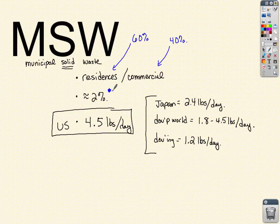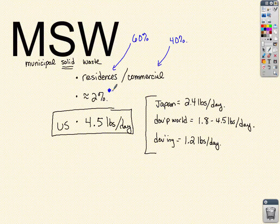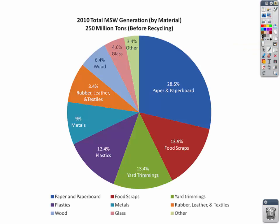What happens to all this waste? There are really three things: it can be disposed of in a landfill, incinerated at a waste-to-energy facility, or recycled. Let's look at the categories of municipal solid waste before recycling. The number one category is paper and cardboard, followed closely by food scraps and yard trimmings, then plastics, metal, rubber, leather and textiles, wood, glass, and other categories.